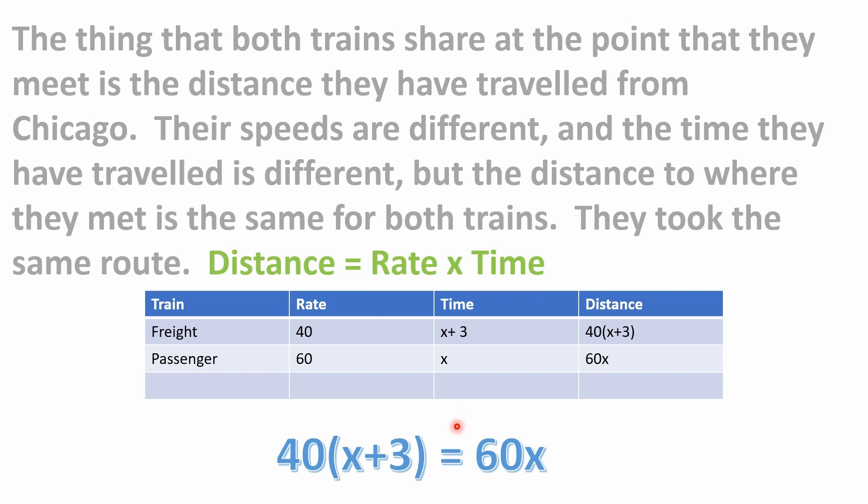What do both trains have in common? At the point where the passenger train overtakes the freight train, they've both traveled the same distance from Chicago. The speeds are different and the times are different, but the distance is the same. We want to find an expression for each train's distance and set them equal. Remember: distance equals rate times time. If you take 40 miles per hour and multiply by hours, the hours cancel and you're left with miles.